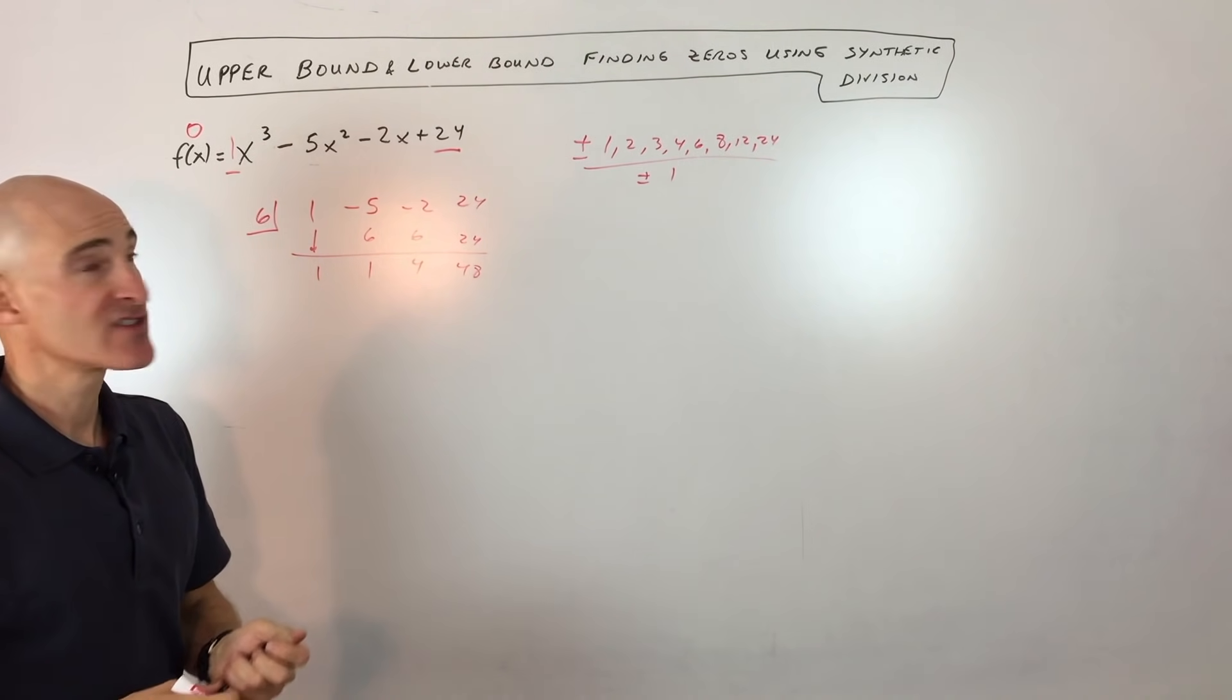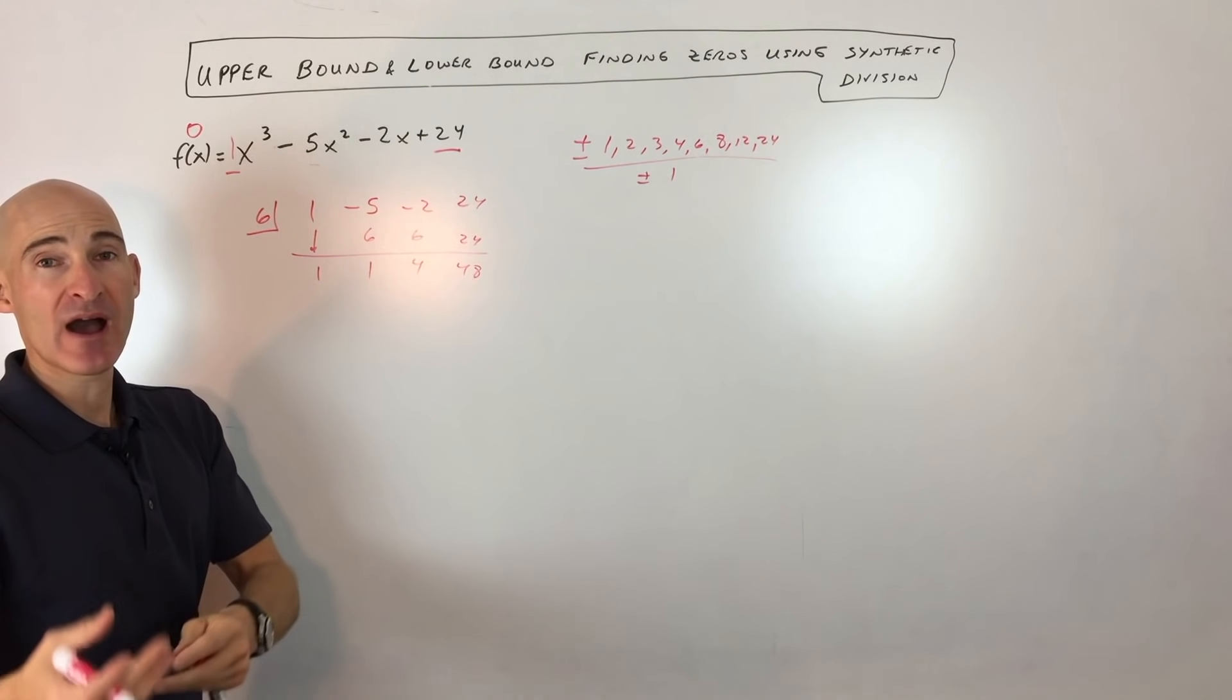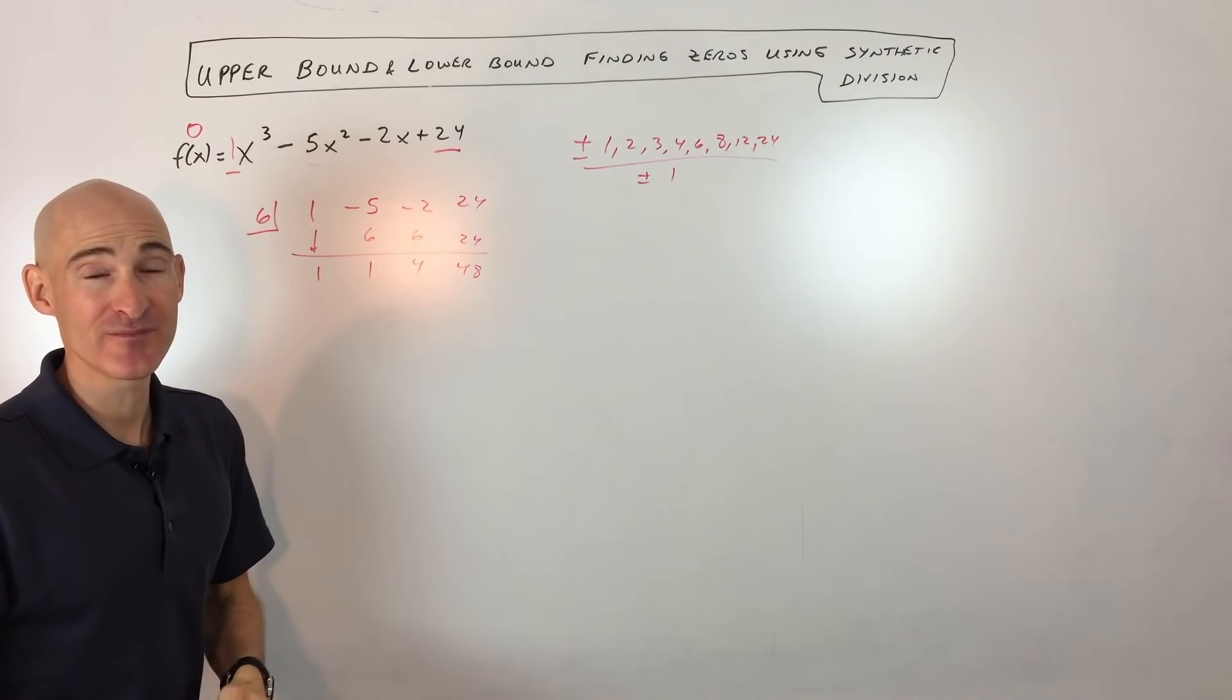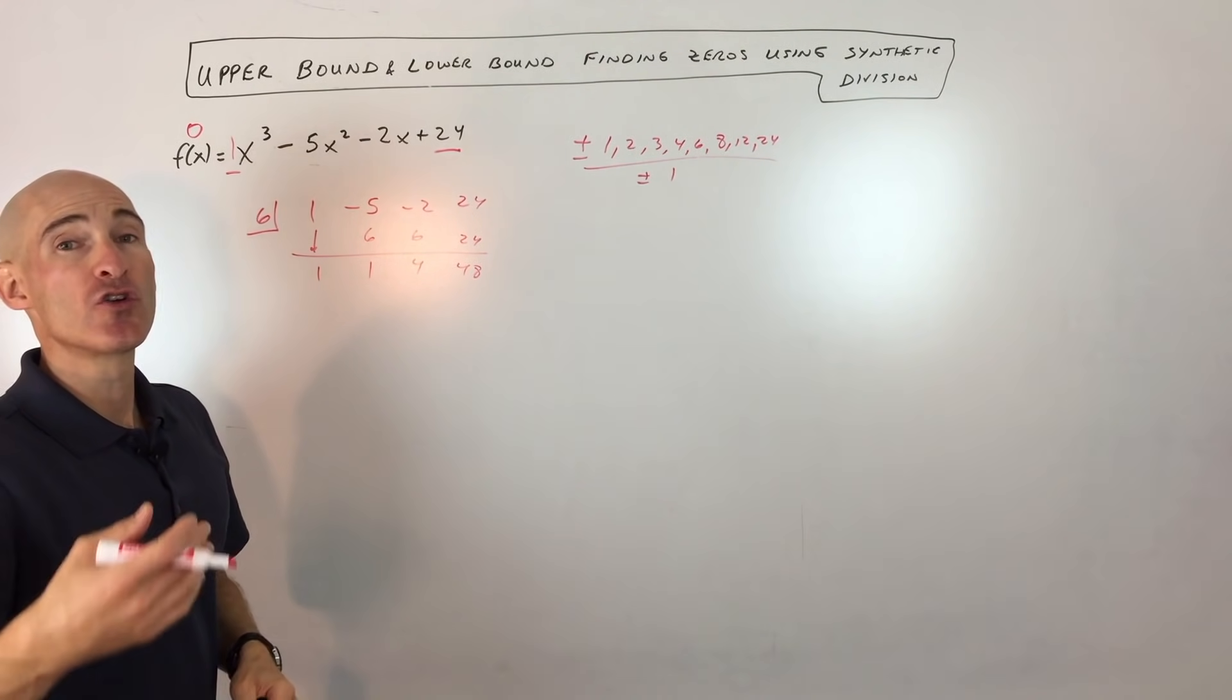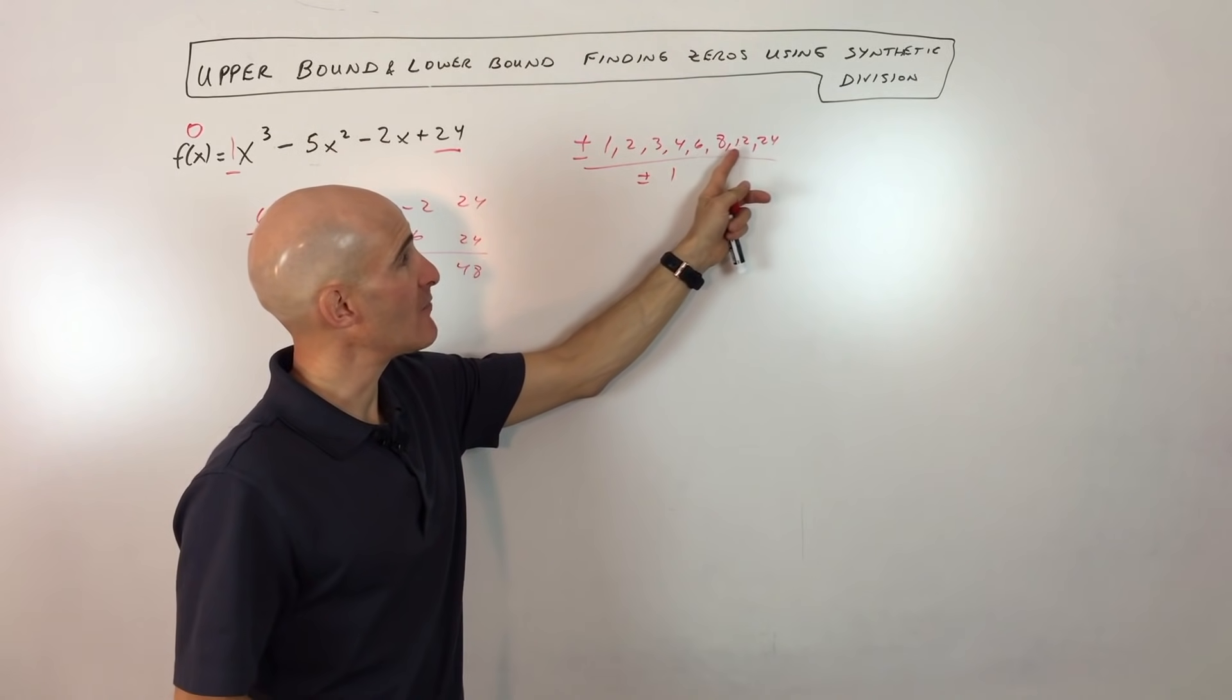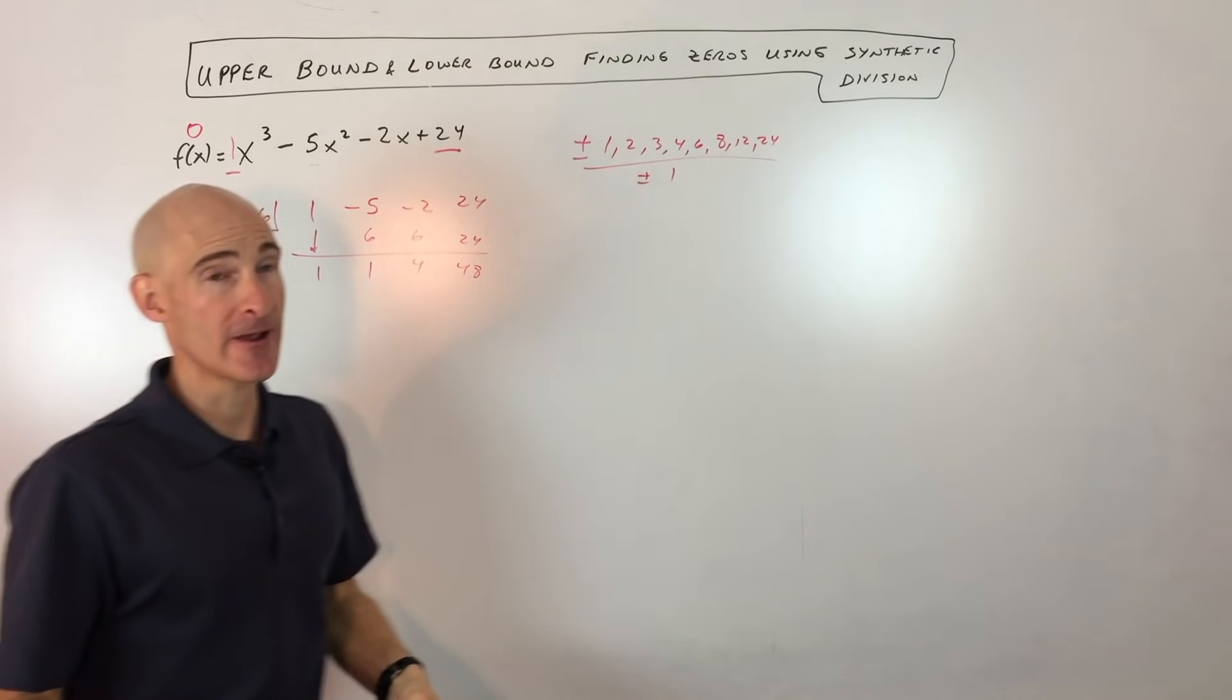But what the upper bound tells us is that when you're testing a positive zero, you're testing a positive quantity, and if all these numbers down here are positive, what that tells you is that six is an upper bound. So that means there's not going to be any zeros that are greater than six, any positive zeros. So that eliminates positive 8, positive 12, and positive 24. So you can see we just cut down our work by quite a bit.